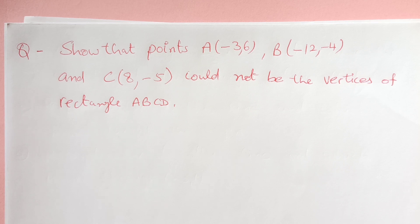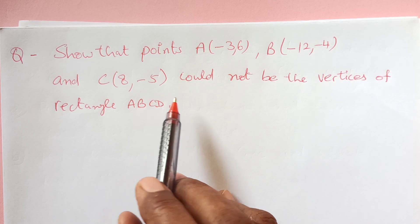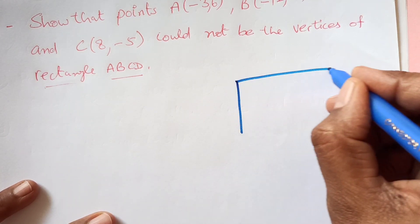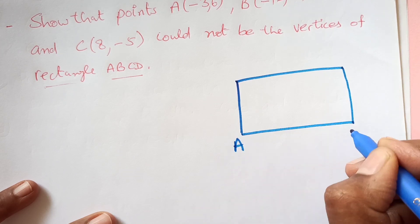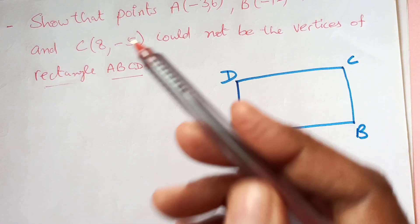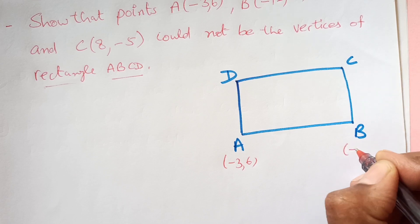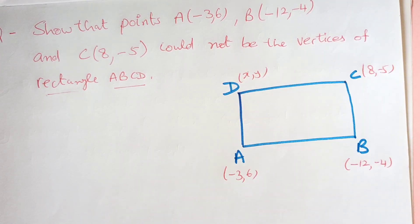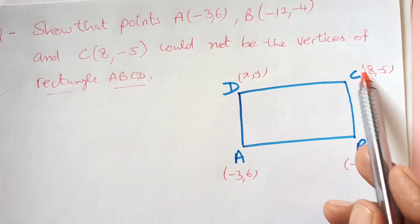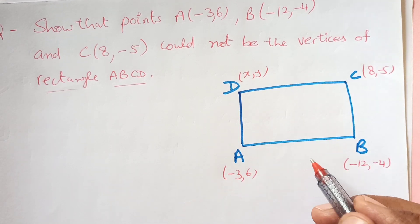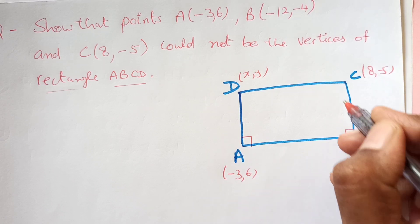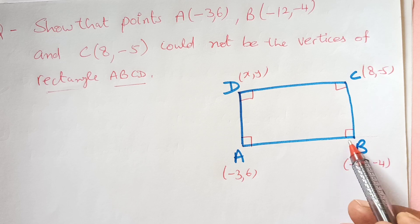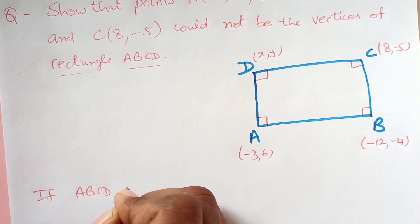Now we have another example, which is a tricky one: show that the points A, B, C could not be vertices of a rectangle ABCD. First, you need to know what a rectangle looks like — it has four vertices A, B, C, and D. We are given coordinates: A is (negative 3, 6), B is (negative 12, negative 4), and C is (8, 5). Let's suppose that this is a rectangle — if so, the angles should all be 90 degrees.